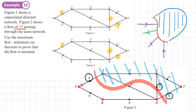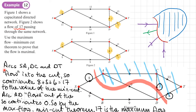Think of it this way: if these are water pipes and you cut this pipe, water flows in from the cut pipe but nothing flows out of it since it's been cut — so arc AD contributes nothing to the cut value. Since arcs SA, DC, and DT flow into the cut, they contribute 8 + 3 + 6 = 17. Arc AD flows out of the cut, contributing zero. By the max flow min cut theorem, 17 is the maximum flow.